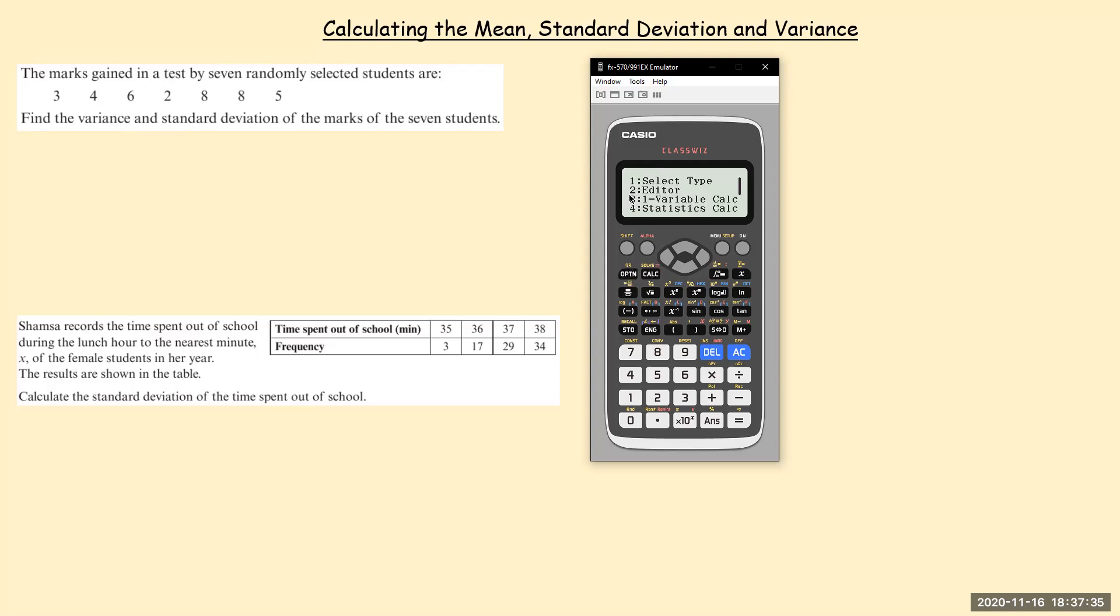And on here there are a few different options we can do. So one is select type, that's just changing where I am on my data, whether it's one variable, two variable. Two is editor. If I mess up my data I can go back and edit it. Three is what we want, we want the one variable statistics.